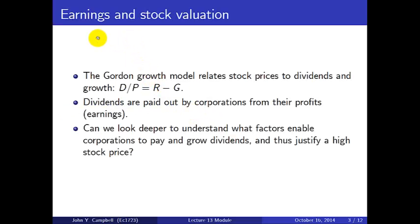We've been talking in the past about a valuation formula, the Gordon growth model, which relates stock prices to dividends and the growth of the firm. The simple way to remember the formula is D over P equals R minus G. This says that companies with higher discount rates have higher dividend yields and hence lower prices, and companies with faster growth have lower dividend yields and thus higher prices.